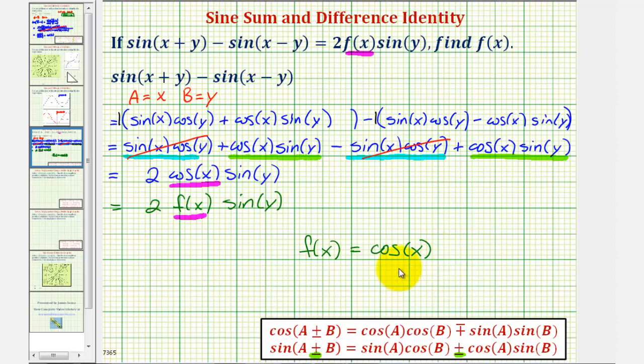The most important part of this question is to be able to apply the sum and difference identity for sine and simplify to obtain two cosine x sine y. I hope you found this helpful.